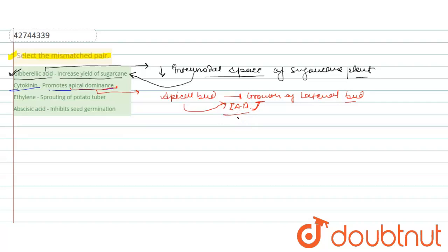So we can see that the second statement is incorrectly matched, because auxin promotes apical dominance instead of cytokinin.